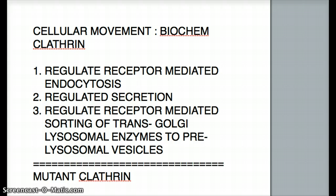So what exactly is clathrin? Clathrin is little particles inside the cell which helps movement of certain things inside the cell. It helps in receptor-mediated endocytosis — it's going to take in particles from outside the cell by receptors, by endocytosis, and clathrin pits are going to coat the vesicle. That regulated process of receptor-mediated endocytosis is achieved by clathrin. So that's function number one.